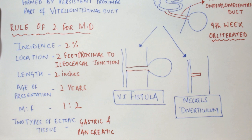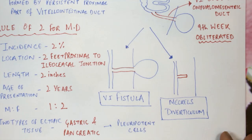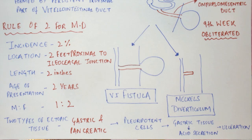Since Meckel's Diverticulum consists of pluripotent cells which can give rise to any type of cells, the gastric tissue is the most common, which can secrete acid and can lead to ulceration of the Meckel's Diverticulum.